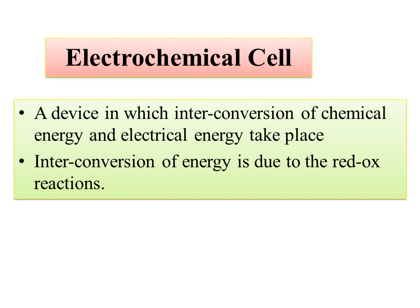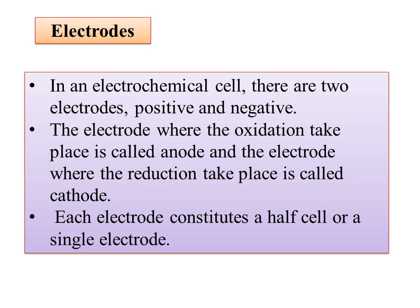The device in which the interconversion of chemical energy to electrical energy takes place, where there is a redox reaction, is called an electrochemical cell. In an electrochemical cell, there are two electrodes — an anode and a cathode — with positive and negative charges respectively, where oxidation and reduction occur.